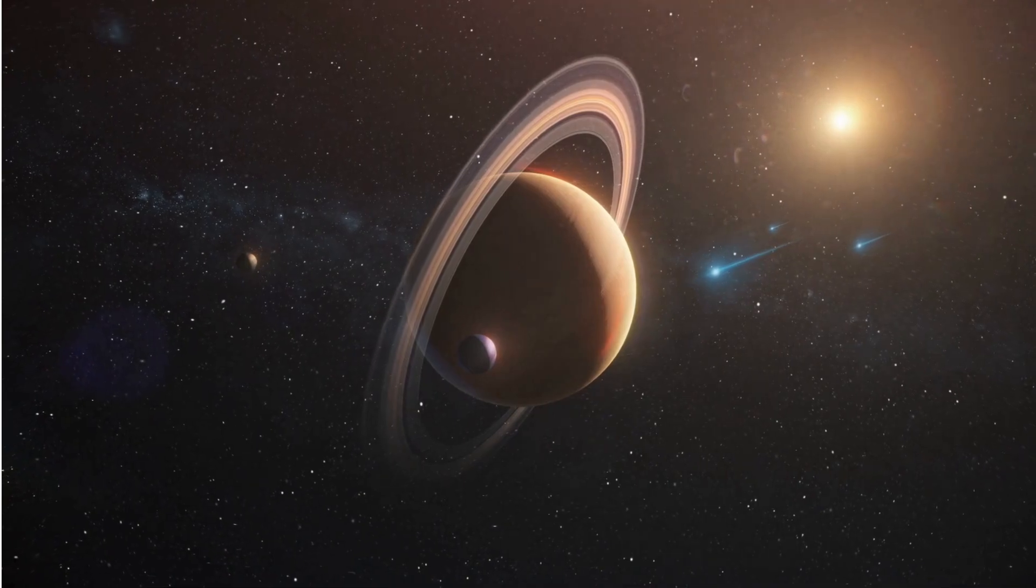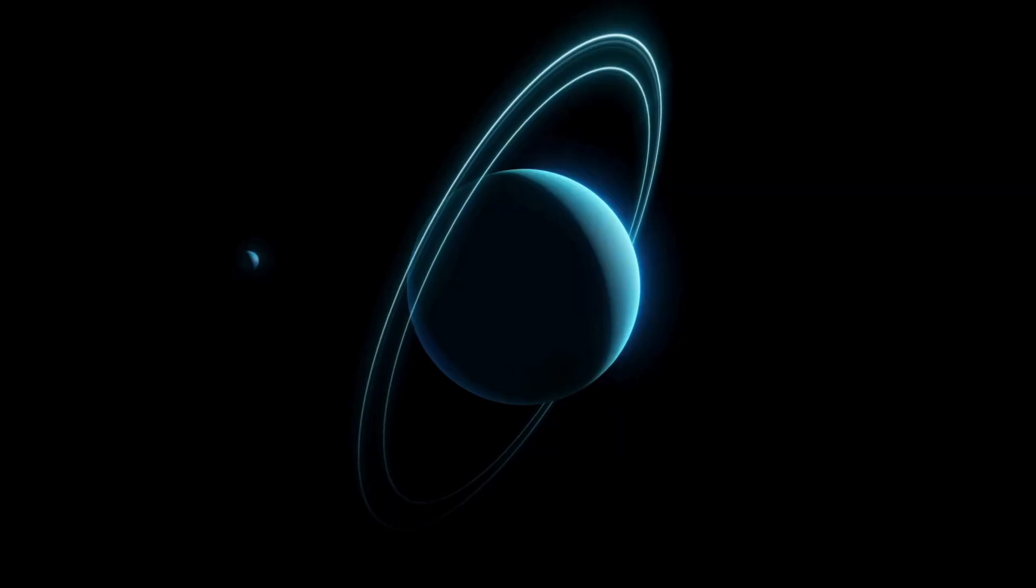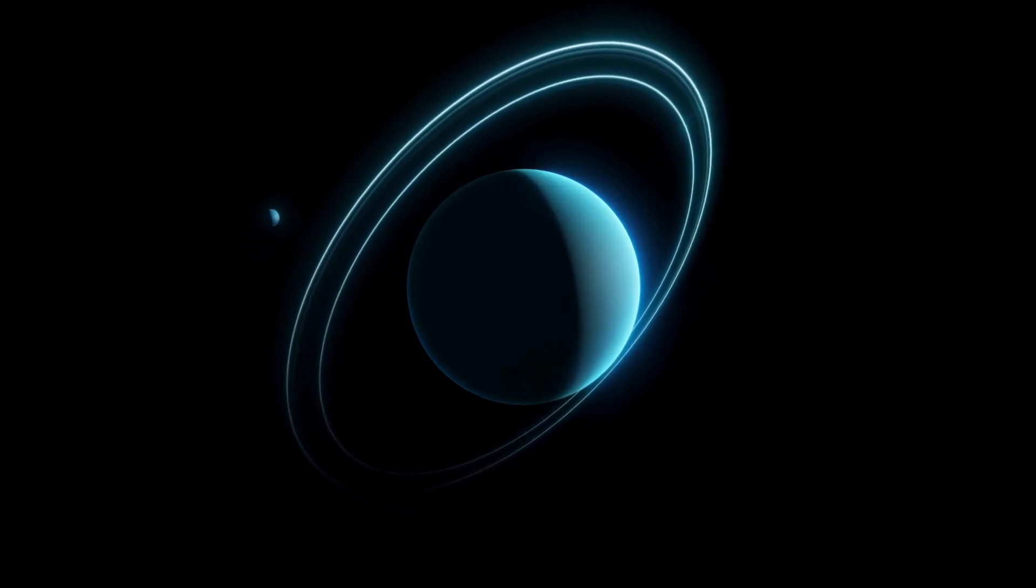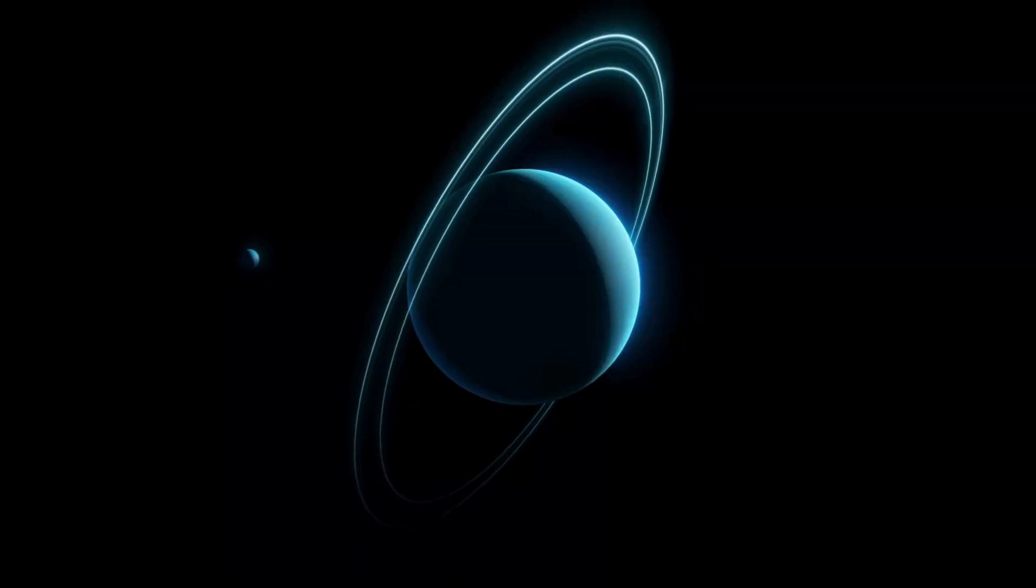Next up is Uranus. Can you say Uranus? Awesome! Here are three facts about Uranus. Uranus rotates on its side, making it unique. It has faint rings around it. Uranus is a very cold planet.